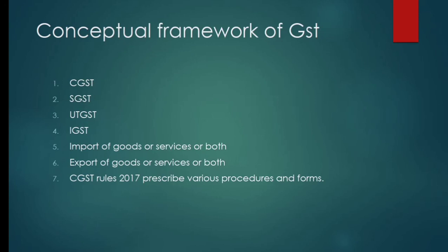The fourth point is IGST — on every interstate supply of goods and services. CGST and SGST apply to intrastate supply of goods and services, but if the transaction is between two states, it is called IGST.